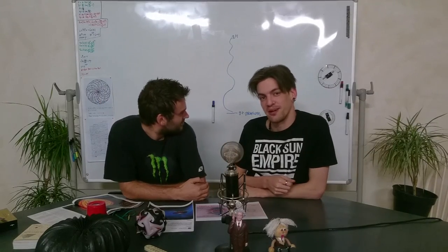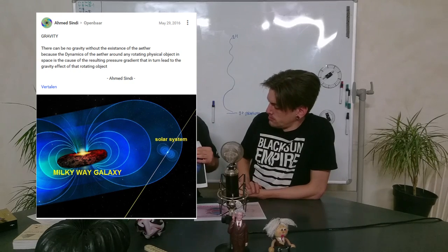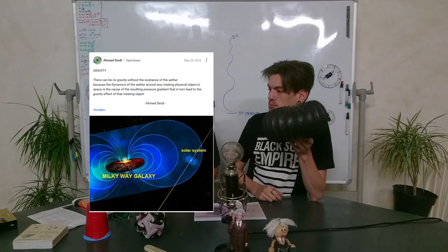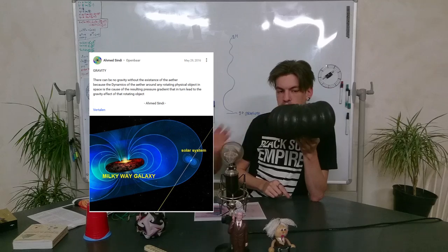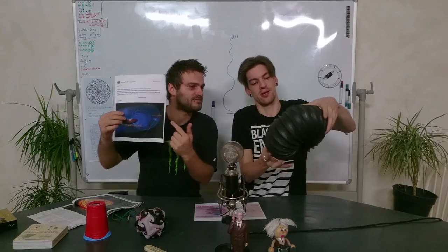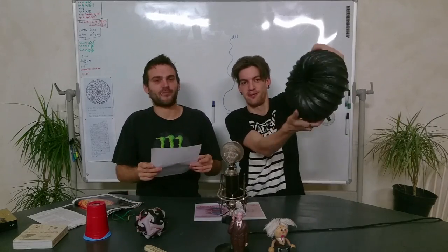He also commented something with a very large image along with it. On this image he showed that he thought the Milky Way looks like a torus — a donut shape — and that there is an ether flow because of the torus shape and the rotation of the torus around its core, and that our solar system would be somewhere within that.